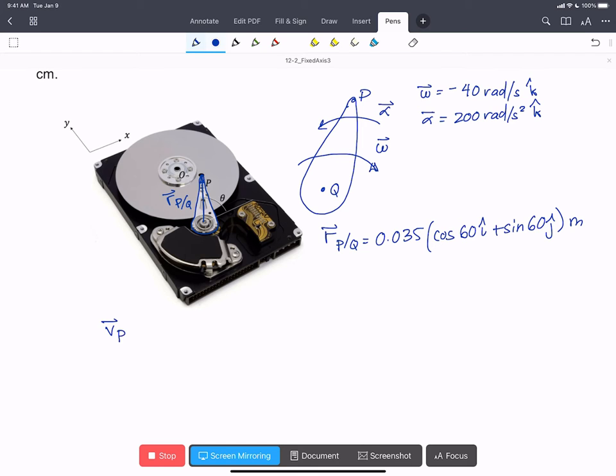So our equation for fixed axis rotation for the velocity of P is going to be equal to omega cross R, P with respect to Q. So that's going to be minus 40 rads per second in the K hat, crossed with 0.035 cos 60 I hat plus sine 60 J hat meters.